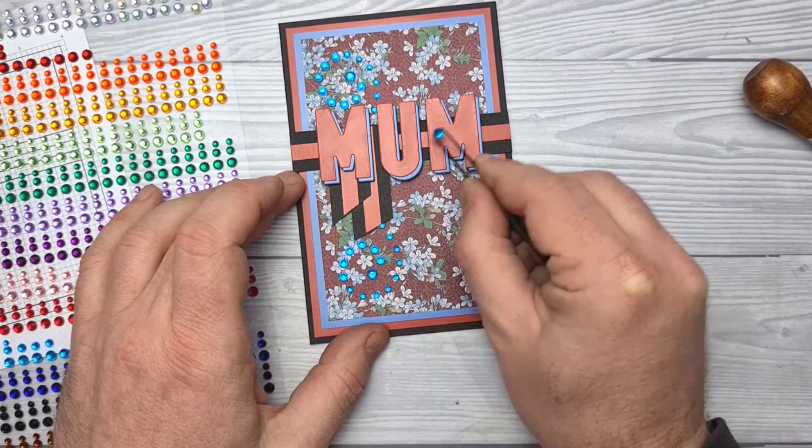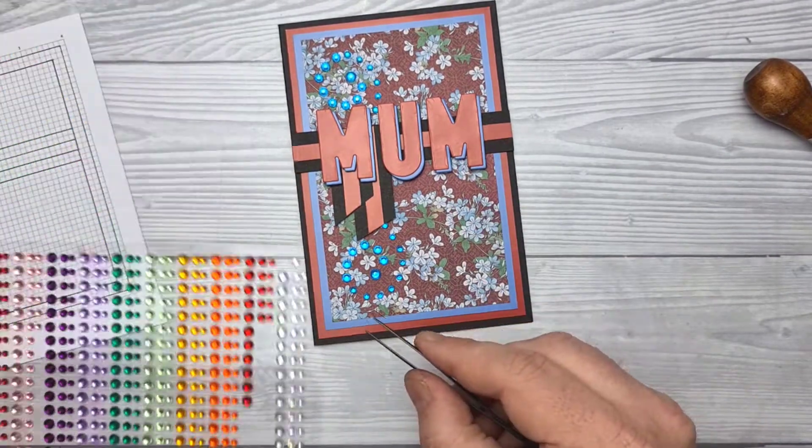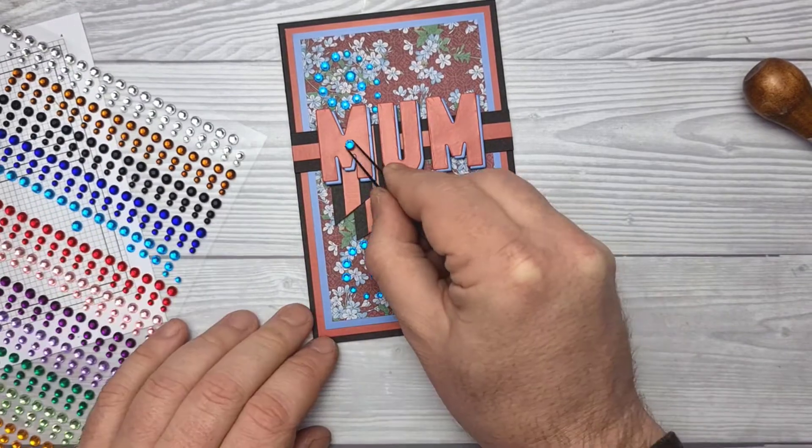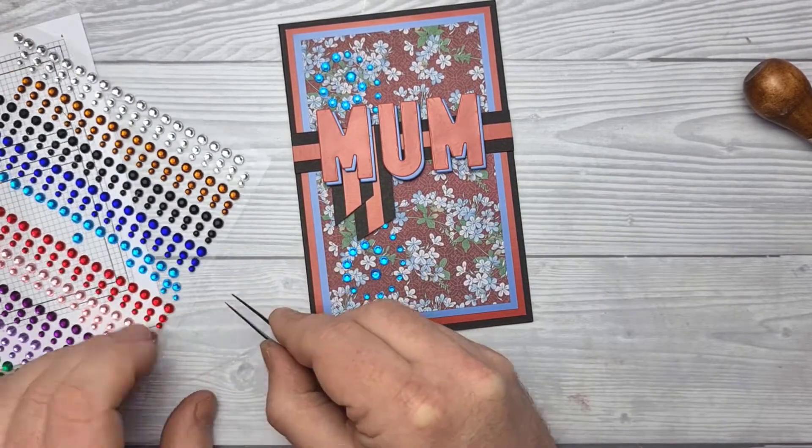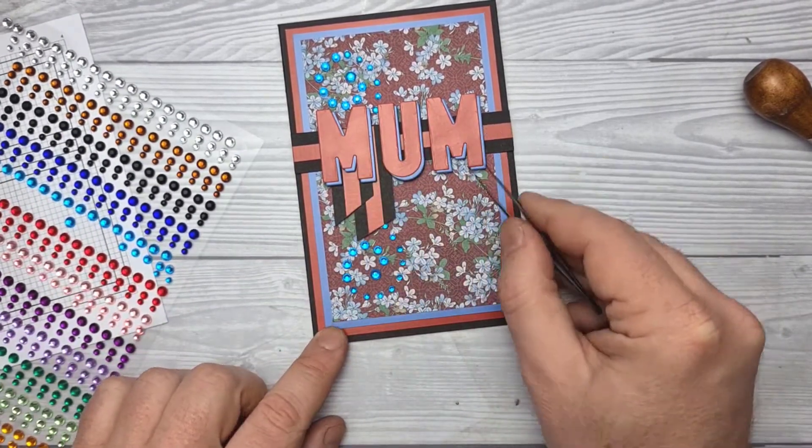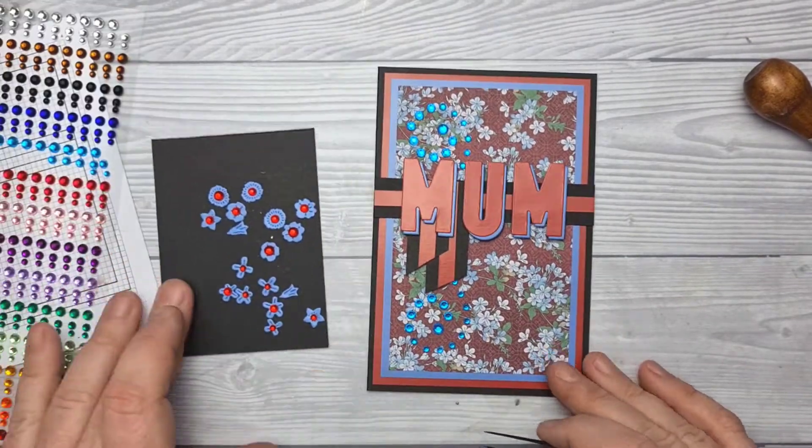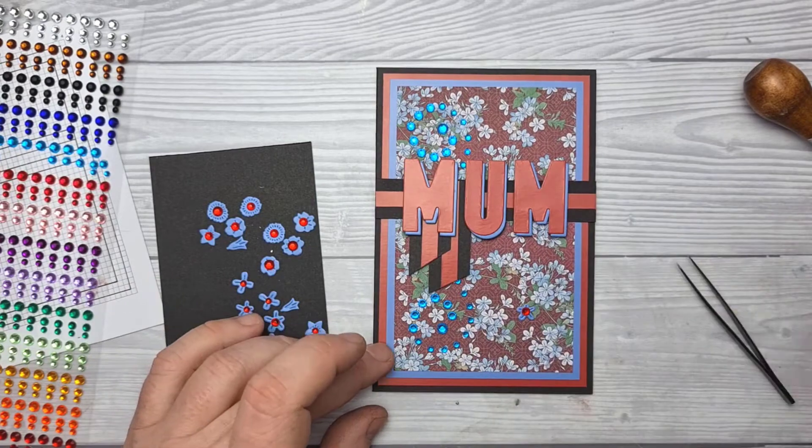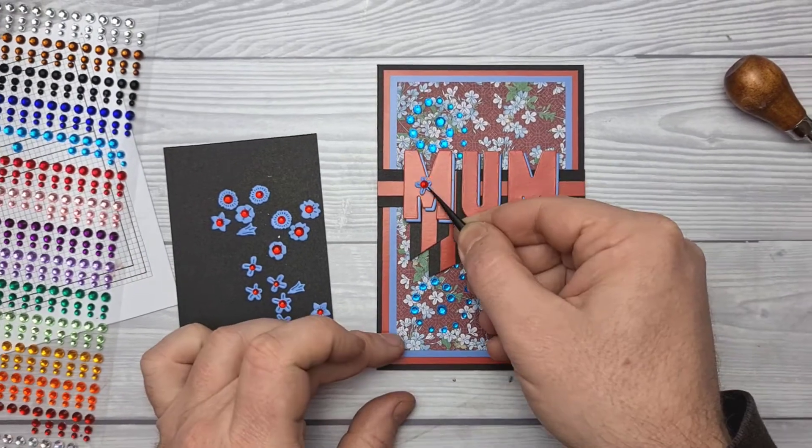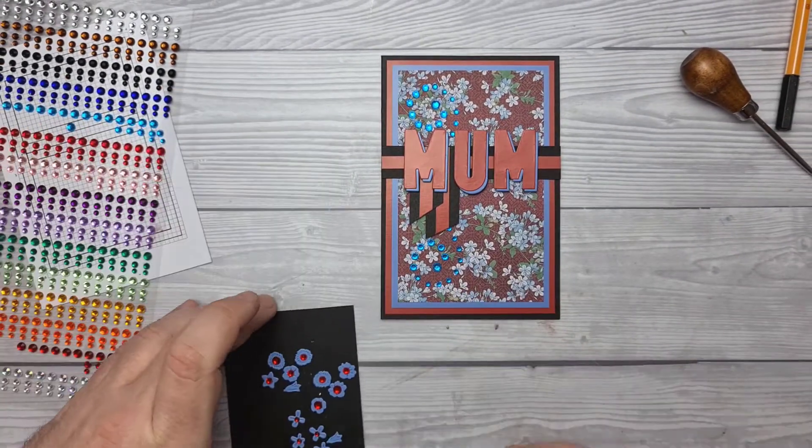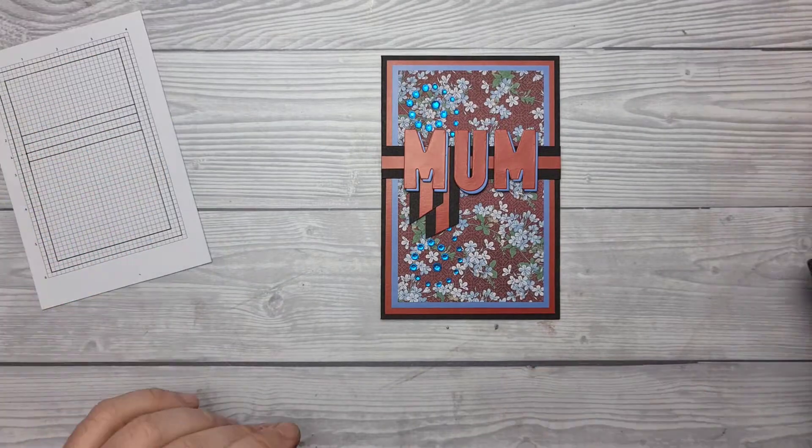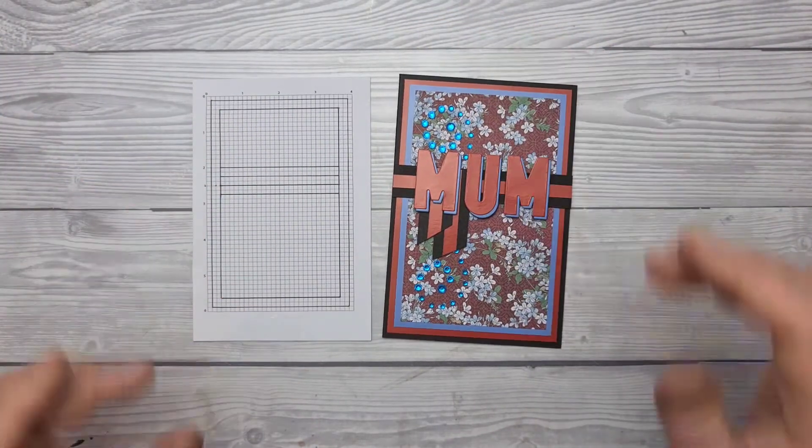Now when I got to the end of this I thought I want to add something extra. So I started playing around with gems. I had already cut some flowers out earlier just to sort of plan out this card. But in the end I decided actually that's quite nice and I'm going to leave it as it is.